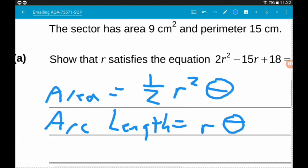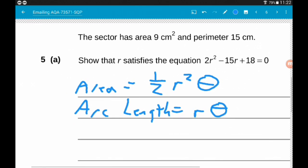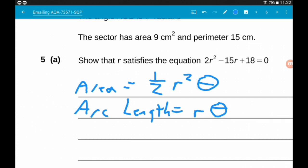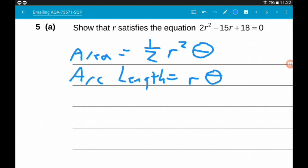Okay, so we know the area of the sector is 9 centimeters squared. So we know ½R²θ = 9.